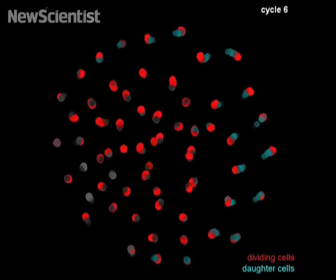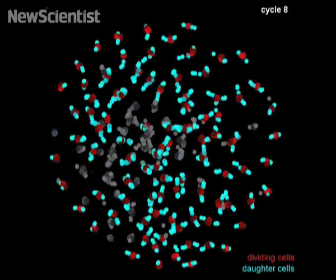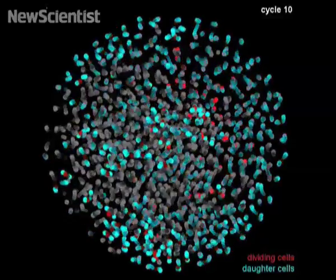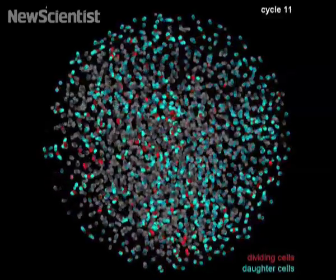In order for one cell to become a complex organism, it has to divide, travel around the body and form specialized tissues. Here they are dividing and growing to form an embryo made of 20,000 cells.